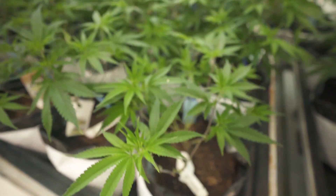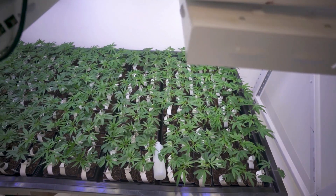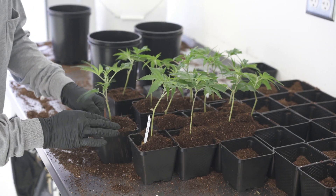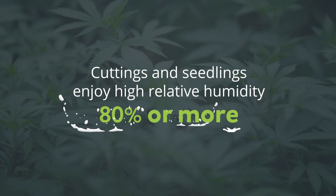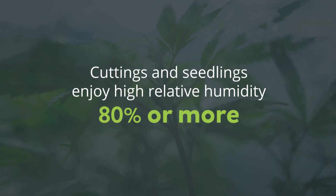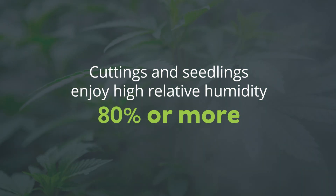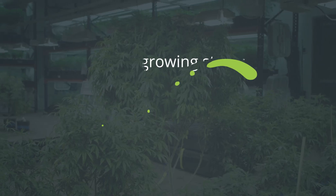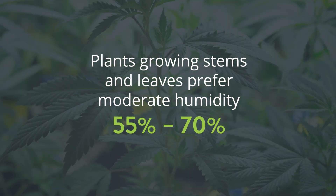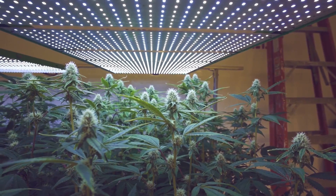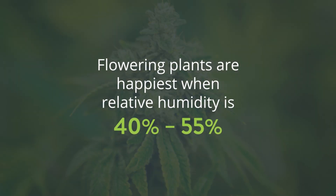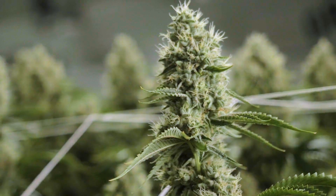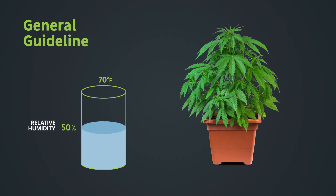Plants don't like being hot and sticky any more than humans do. Plants will be most happy when relative humidity is adjusted throughout the growth cycle. When your plants are just starting out as cuttings or seedlings, they enjoy really high relative humidity — 80% or more. At this stage, you don't want dry air pulling moisture from your plants or putting stress on your undeveloped root systems. When your plants are growing stems and leaves, they prefer more moderate relative humidity, between 55% to 70%. When your plants are flowering and fruiting, they are happiest when the relative humidity is between 40% and 55%. This helps them concentrate the production of flowers, buds, and fruit. General guidelines suggest as plants develop, their need for humidity decreases.